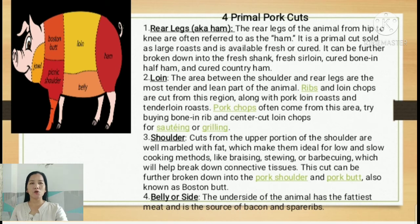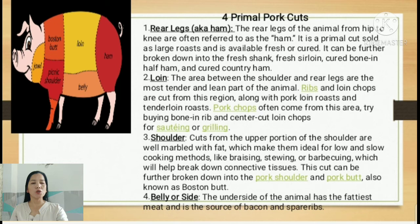The third primal cut of pork is the shoulder — called 'kasim' in Filipino. Cuts from the upper portion of the shoulder are well marbled with fat, making them ideal for low and slow cooking methods like braising, stewing, or barbecuing, which help break down connective tissues. This cut can be further broken down into pork shoulder and pork butt, also known as Boston butt.